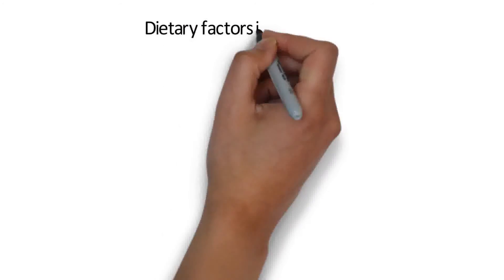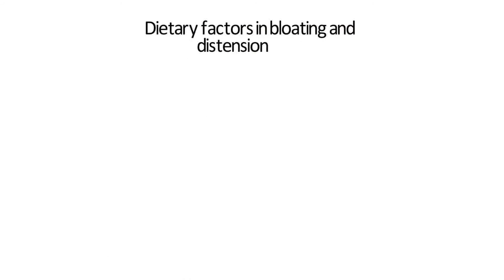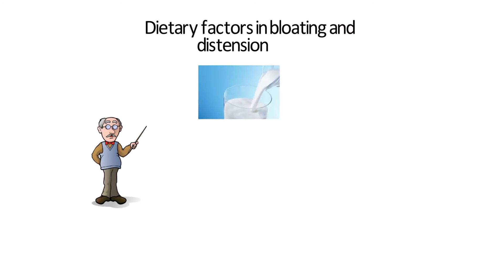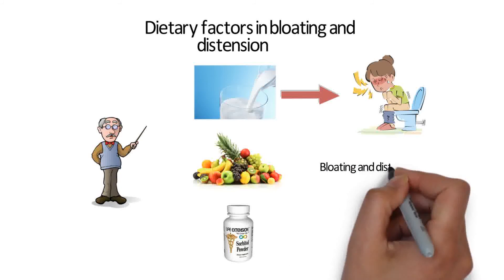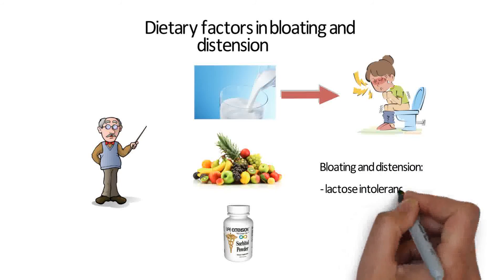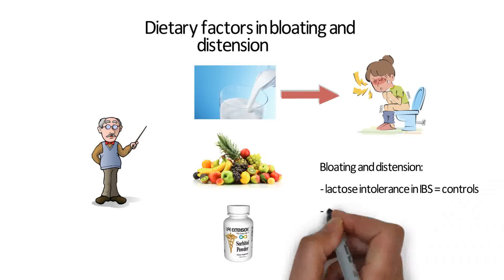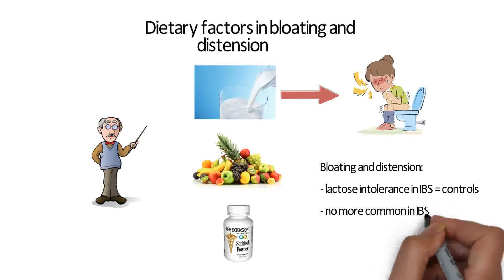Finally, let's consider dietary factors as many patients relate that their symptoms are provoked by food. Remember that bloating and distension occurs in individuals with lactose and fructose intolerance, and also in individuals who consume large quantities of the osmotically active artificial sweetener, sorbitol. These factors should be considered in the differential diagnosis. However, lactose intolerance is no more common in IBS than healthy controls, and is equally prevalent in IBS patients with and without bloating and distension.